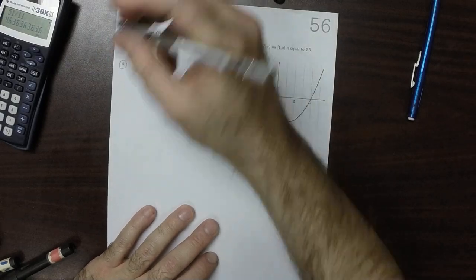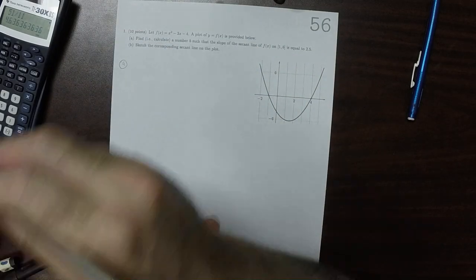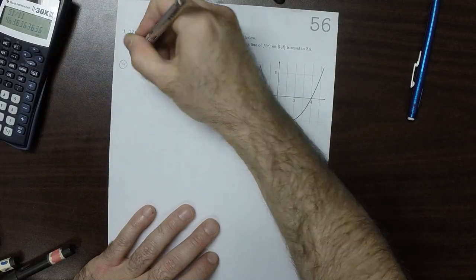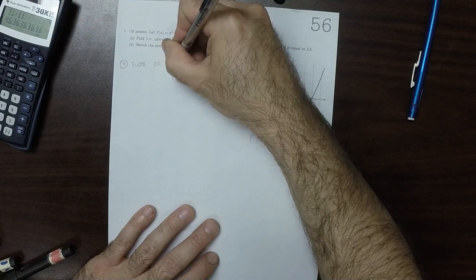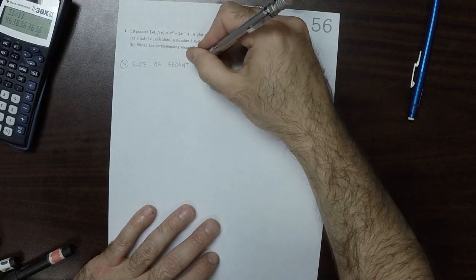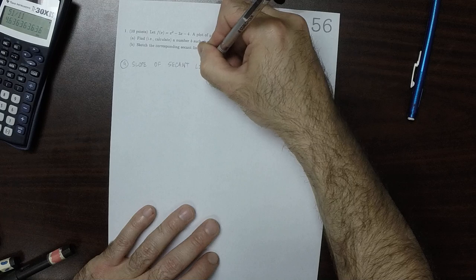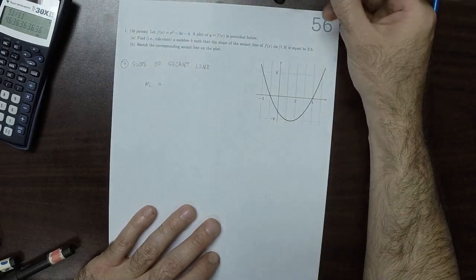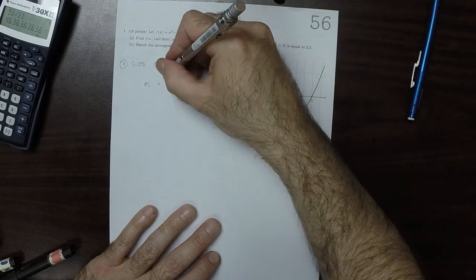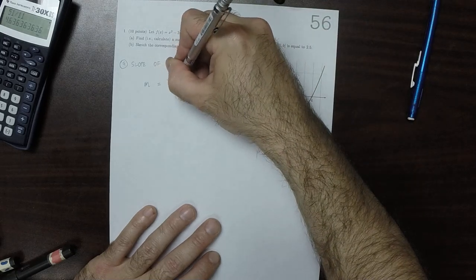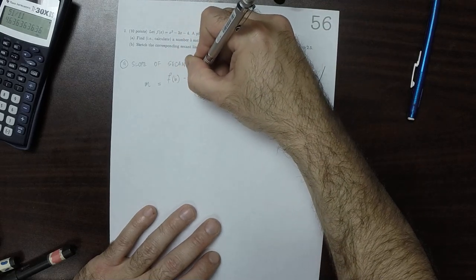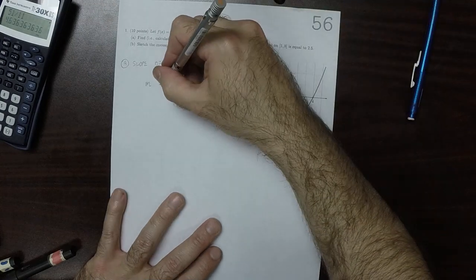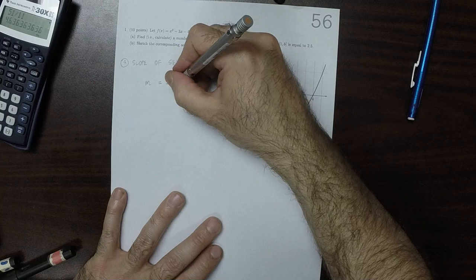we know that the slope of the secant line is given by m on that interval will be f of b minus f of 1 over b minus 1.